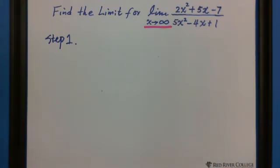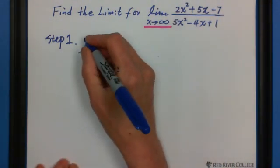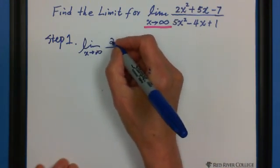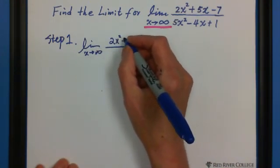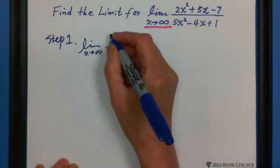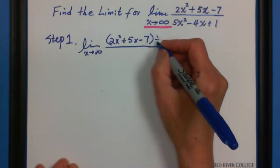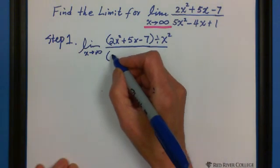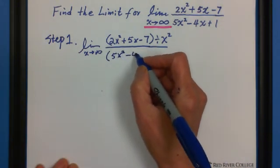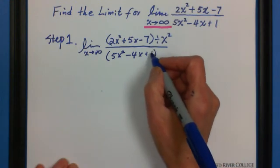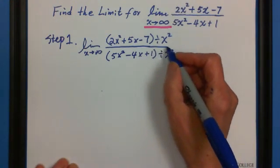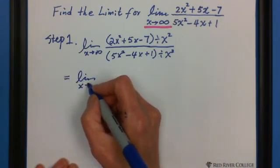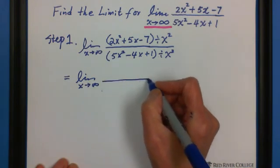So we write down limit x approaches to infinity. We do this one. 2x squared plus 5x minus 7 divided by the highest exponent, which is x squared. Same job for the bottom. Divided by x squared.